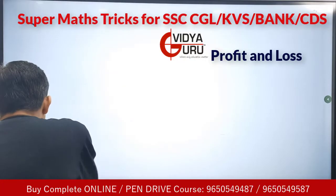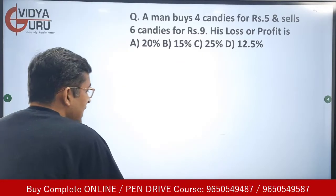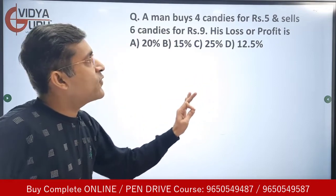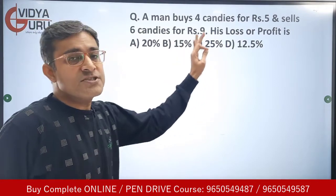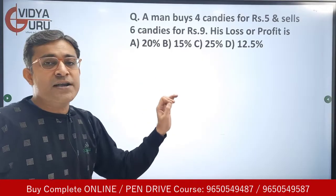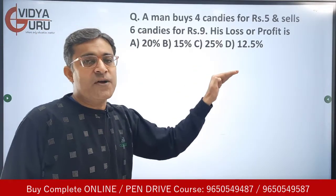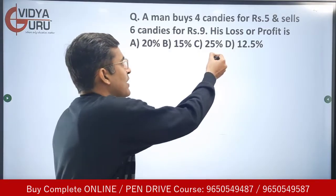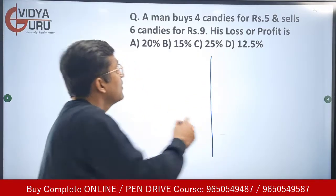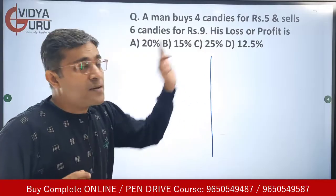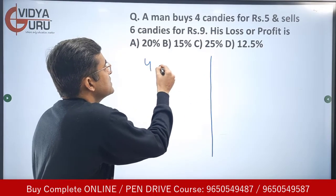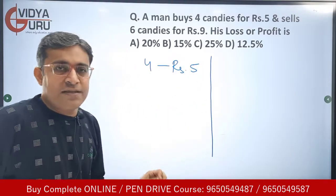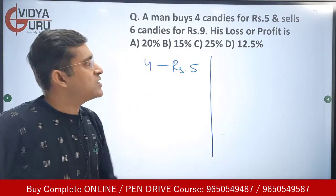Let's get started with the first question. A man buys four candies for rupees five and sells six candies for rupees nine — we have to find out if he is making a loss or profit and what it is in percentage terms. Four candies are being purchased for rupees five, so rupees five is the cost price.